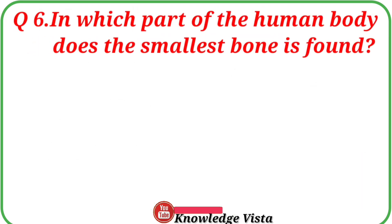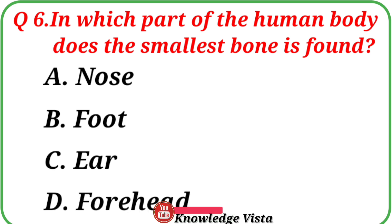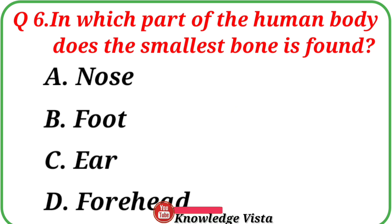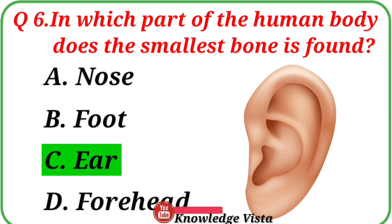Question number 6: In which part of the human body is the smallest bone found? Your options are: A. Nose, B. Foot, C. Ear, D. Forehead. Correct answer is option C, Ear. The smallest bone is found in the ear.